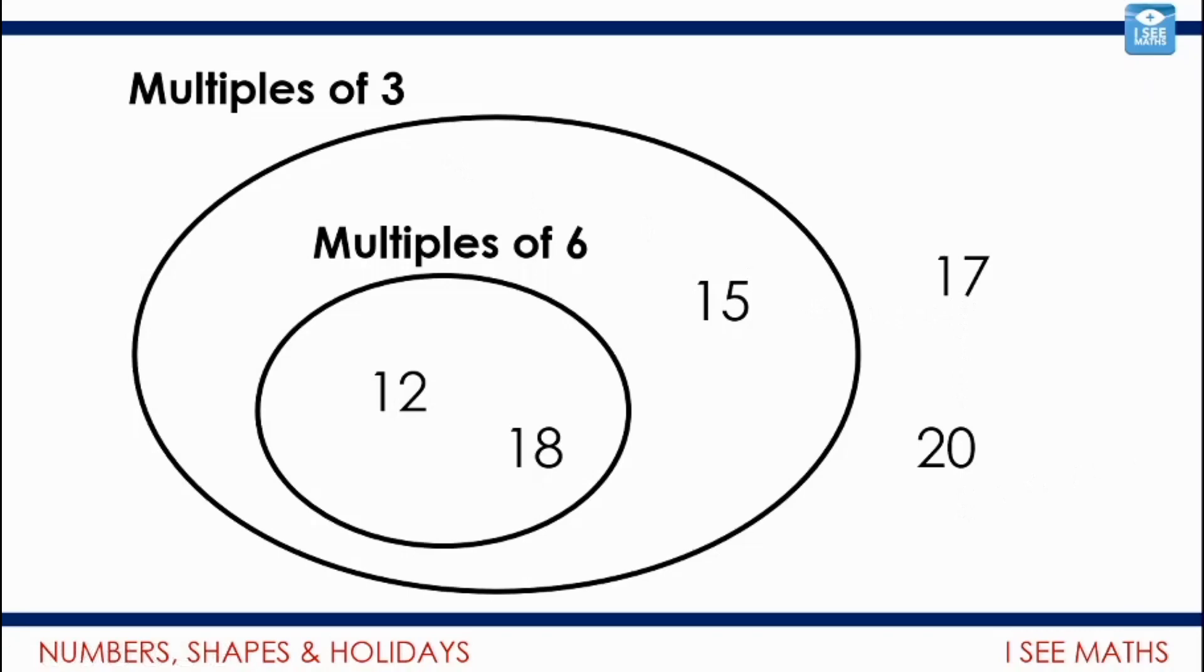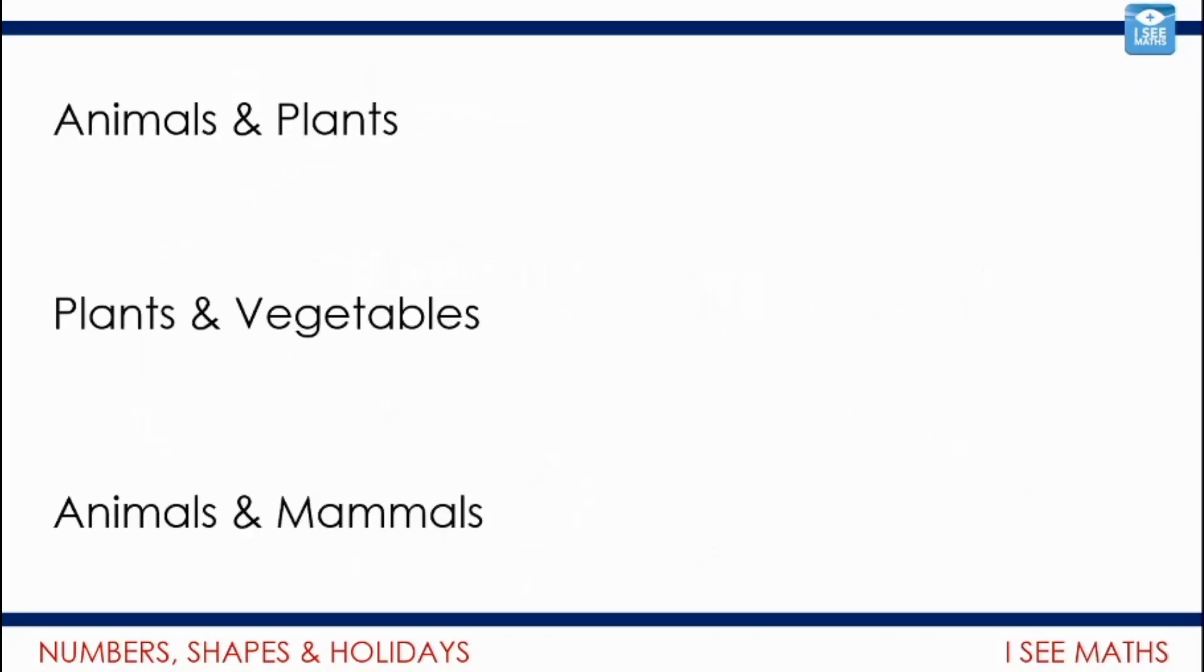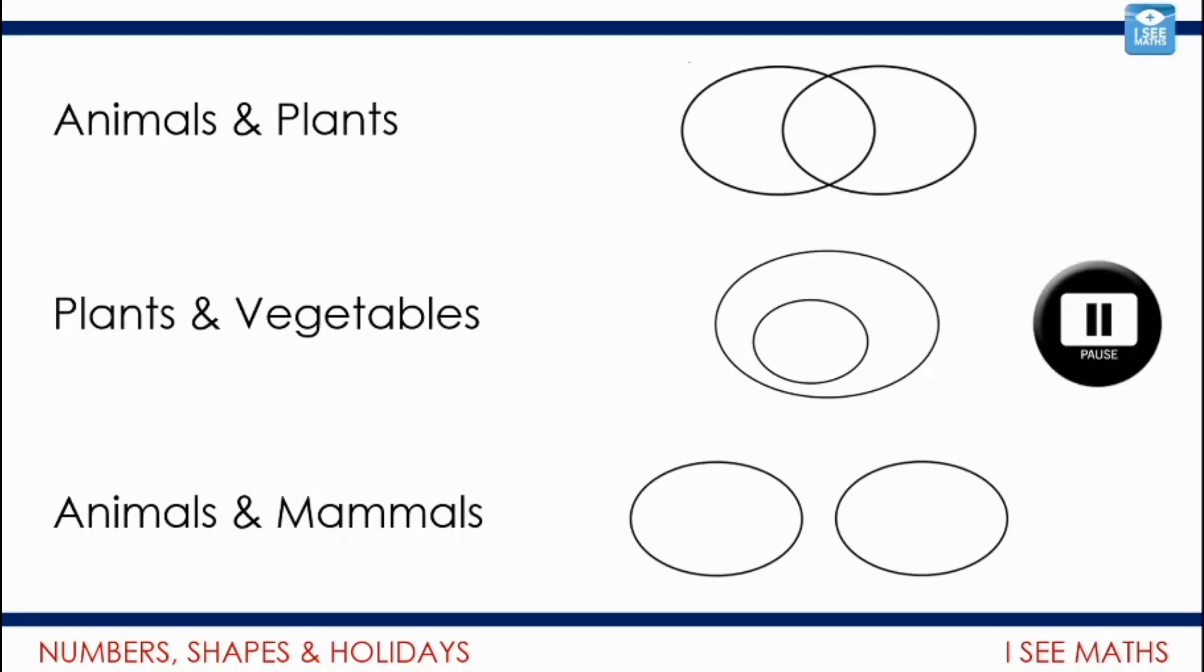Which kind of diagram to use? Have a think about this. We've got animals and plants, plants and vegetables, animals and mammals. For each example, which would be the appropriate kind of diagram to sort the information that's required? See if you can think. I'm going to join those up, a heading to a diagram. Which one will be which? Pause the video and see if you can see.